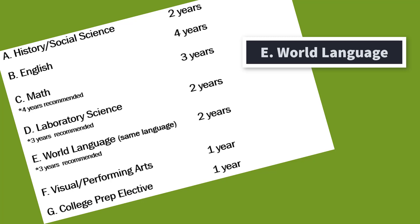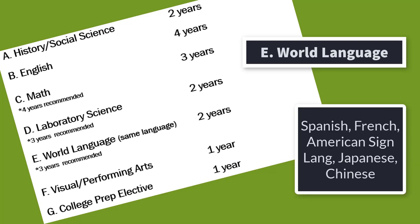Subject requirement E is a world language. There is a two-year requirement, but three years are recommended, and it does have to be consecutive years of the same language. Some examples of classes we offer are Spanish, French, American Sign Language, Japanese, and Chinese. If you took one of these languages in eighth grade and it counts for high school credit, you can use this towards this requirement.